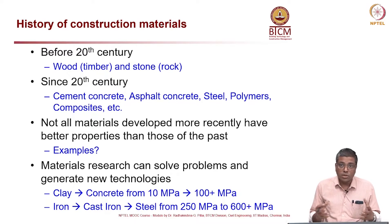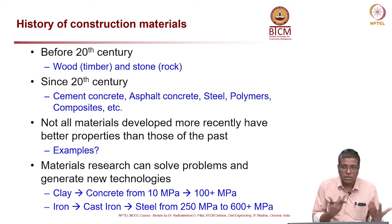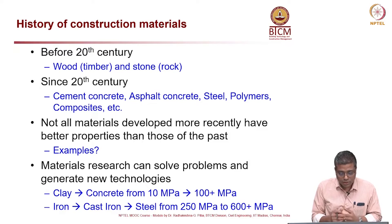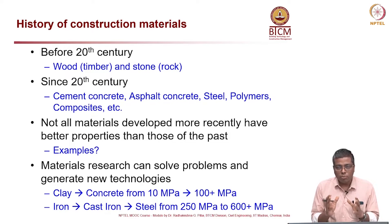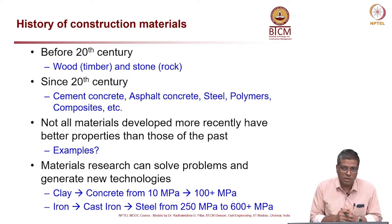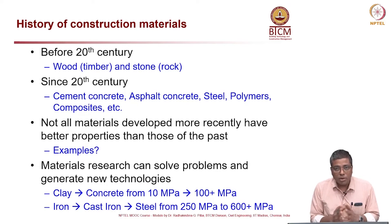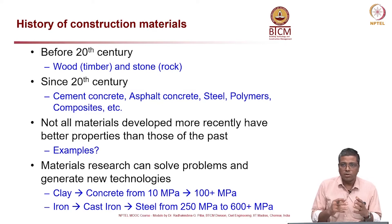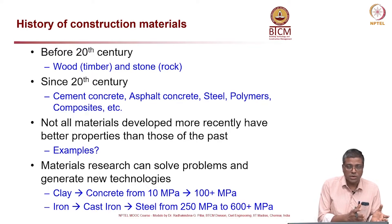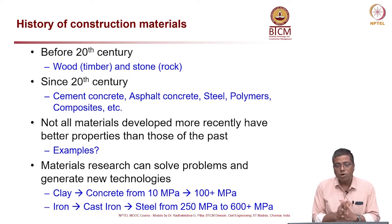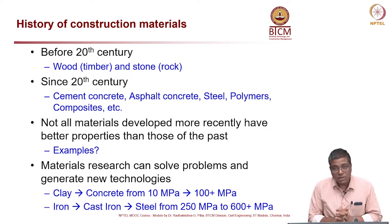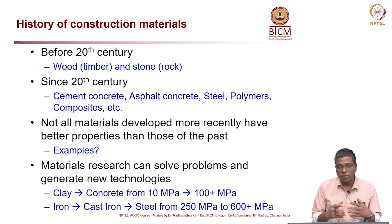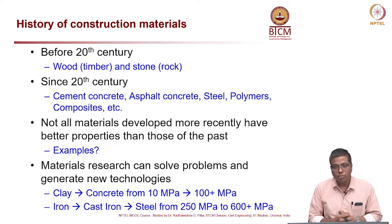One question is whether all these modern materials are better than those in the past — maybe not always. Some properties may be enhanced, but other properties might not be. We have to see what properties we want from a particular material system. For example, in some cases strength may be very important; in other cases, thermal conductivity may be more important. Material research can solve problems and help develop new materials and technologies. Consider clay — the old homes used clay, but it was probably not strong enough to make multi-story buildings, so we started making concrete.